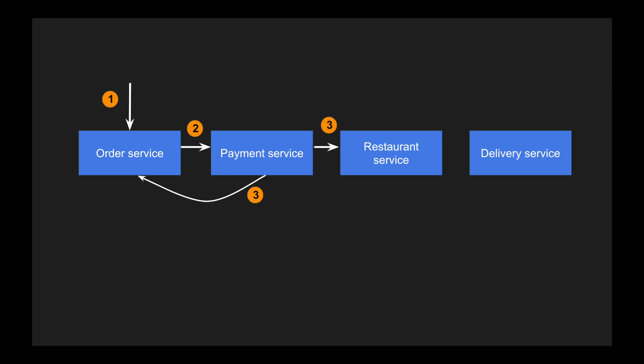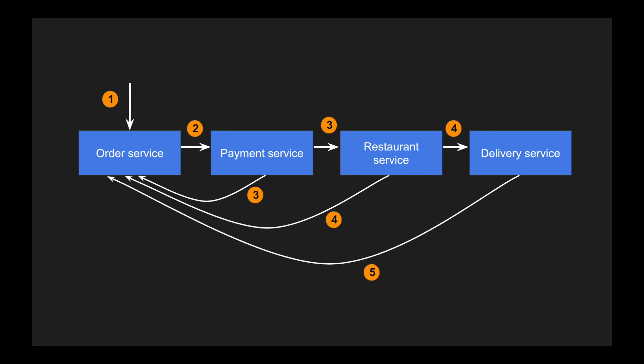The restaurant service then goes and books the particular order in the restaurant. Once it finishes booking, it updates the order service saying the order is placed. An additional event from the restaurant service is 'order prepared,' and once the order is prepared, the delivery executor picks it up from the restaurant and delivers it to the customer. Finally, the workflow completes with 'order delivered.'